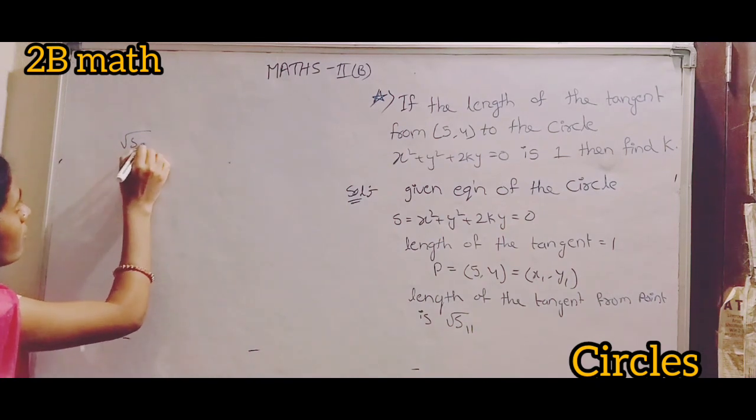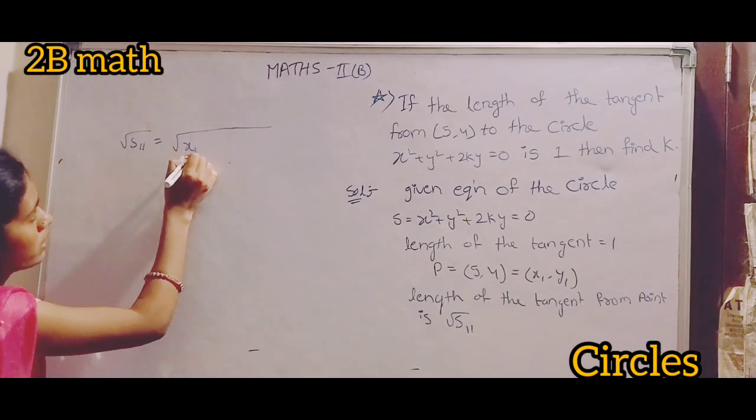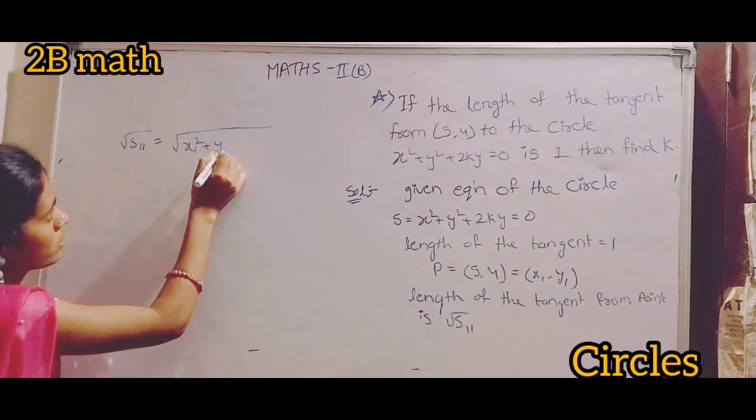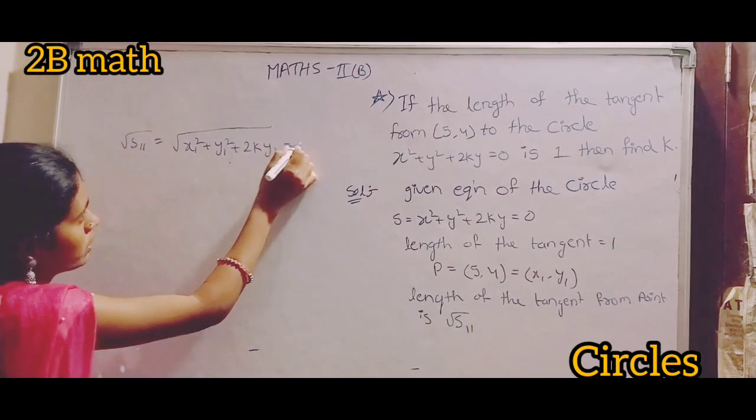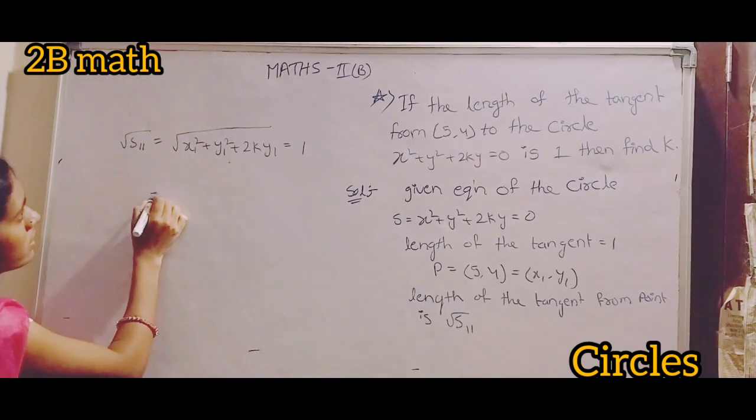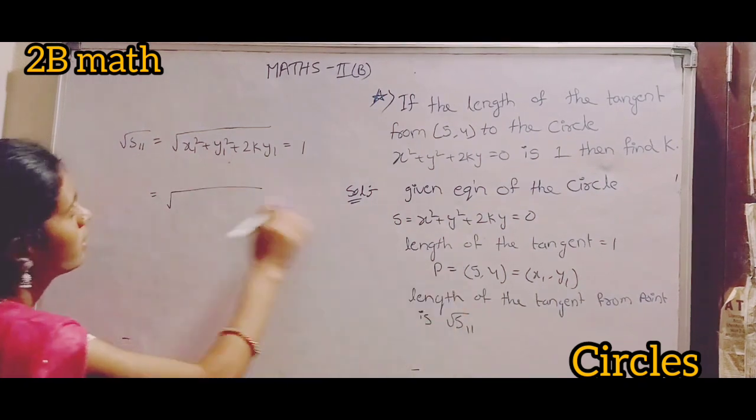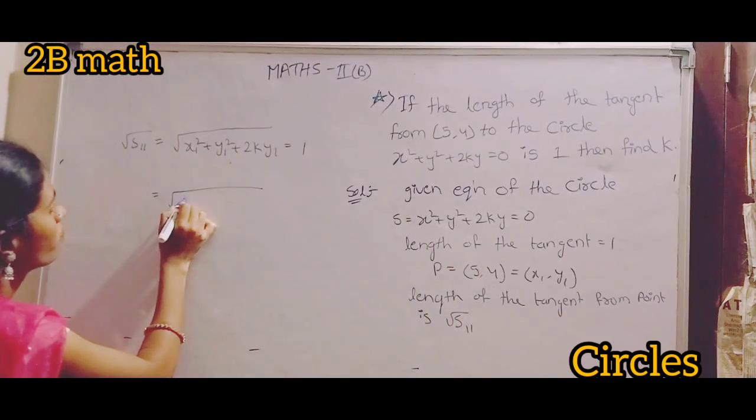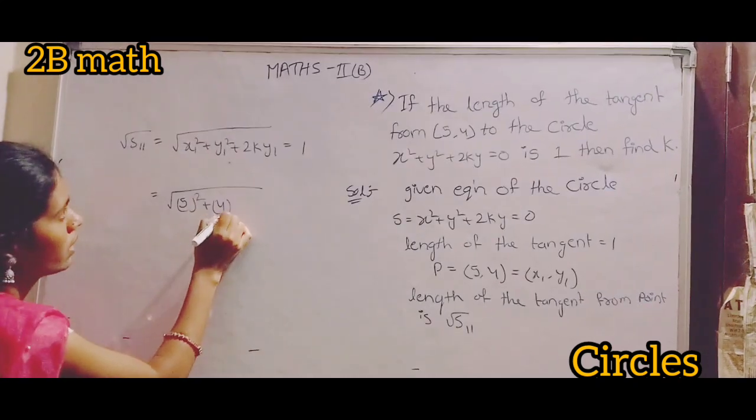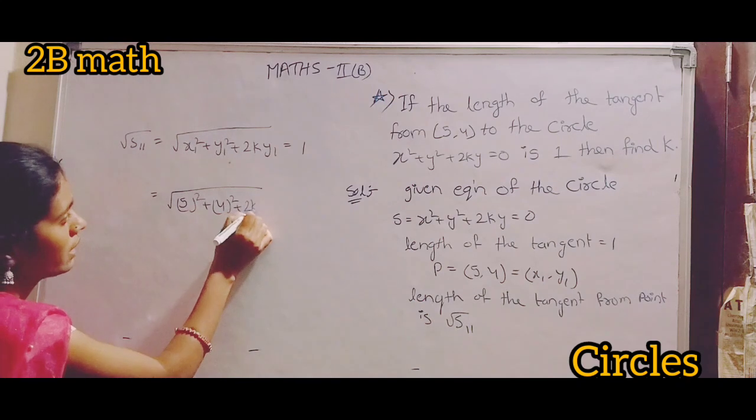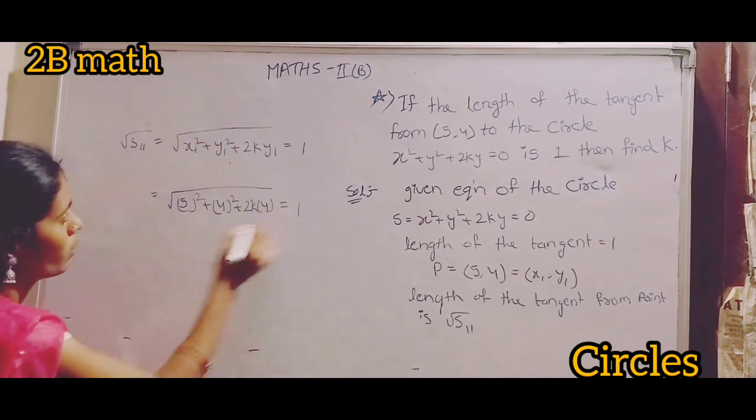Root s double 1 equals root of x₁² + y₁² + 2ky₁ = 1. Root of 5² + 4² + 2k(4) = 1.